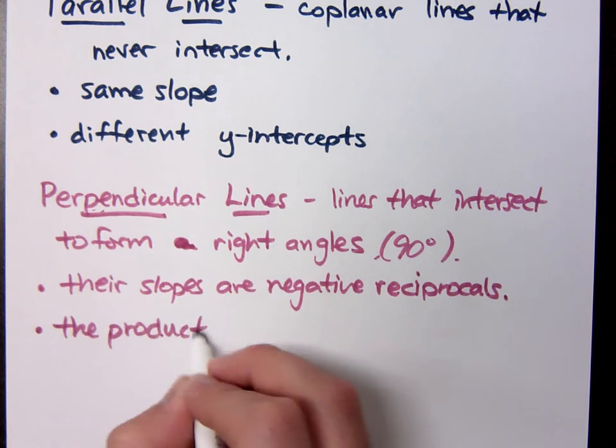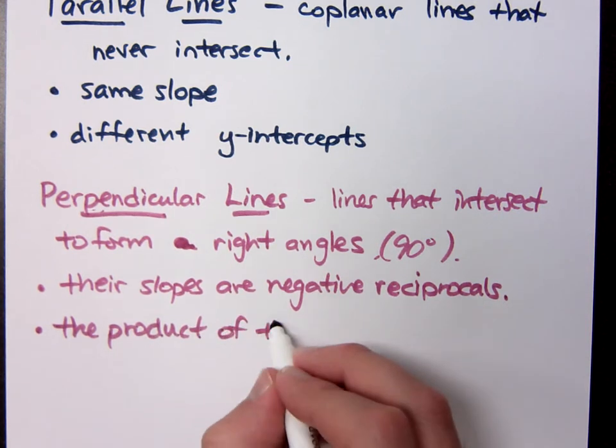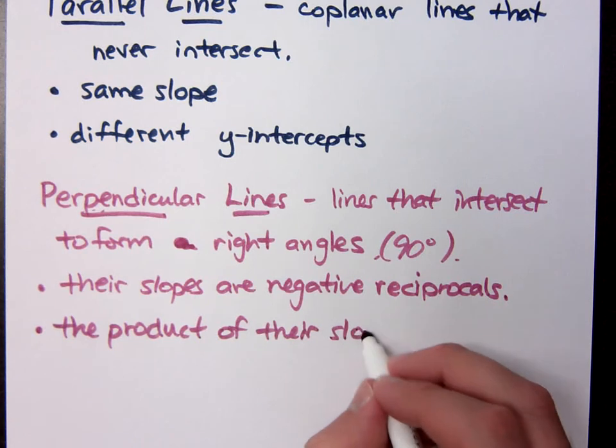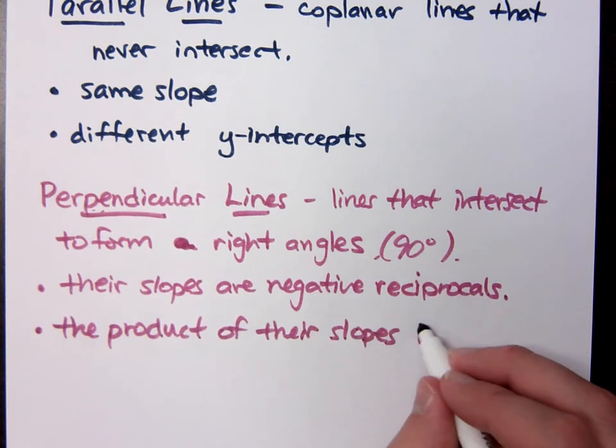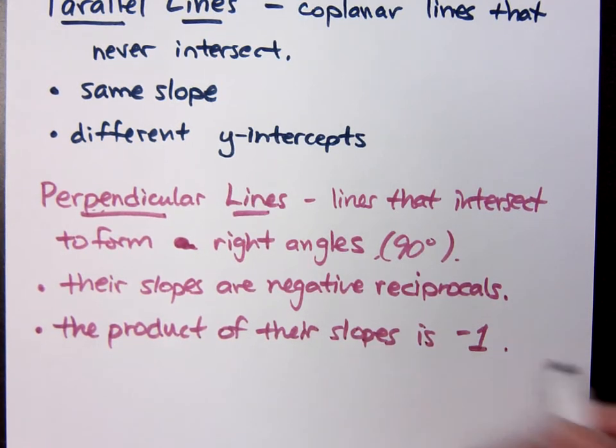What does product mean? Right. The product of their slopes, when you multiply their slopes, you get negative one.